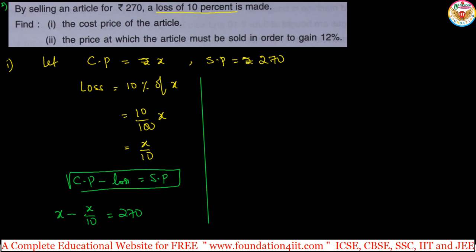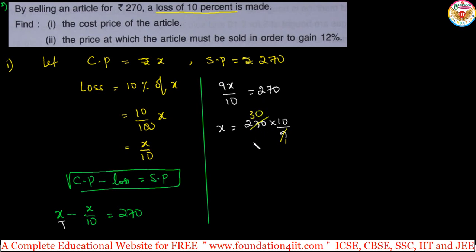Taking LCM: 10x minus x gives 9x by 10 equals 270. So x equals 270 into 10 divided by 9, which is 2700 divided by 9, that is ₹300. Therefore, cost price equals ₹300. That is the first part answered.